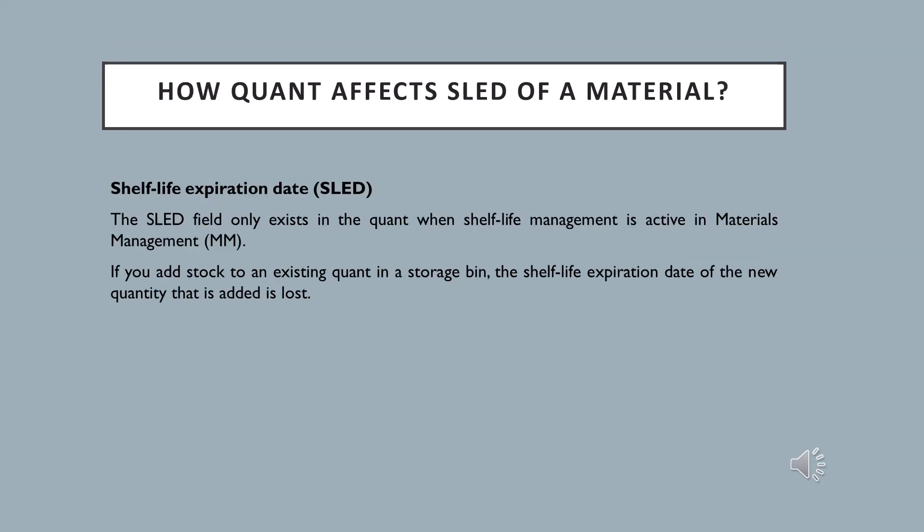One important thing to discuss is the shelf life expiration date. If your system and material management are using the shelf life expiration date — as some materials get older and expire — then in the case of a quant, when we put new material into an existing material and mix them, the new material loses its shelf life expiration date information. So it is important to consider the shelf life expiration date when working with quant. If you add stock to an existing quant in a bin, the shelf life expiration date of the newly added quantity is lost.